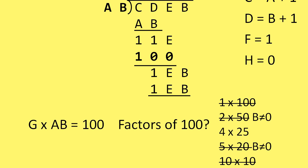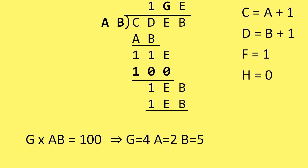That also gives us our values for G, A, and B. In other words, it implies that G is going to be 4, A is 2, and B is 5. We'll add these values to our list: G equals 4, A equals 2, and B equals 5.